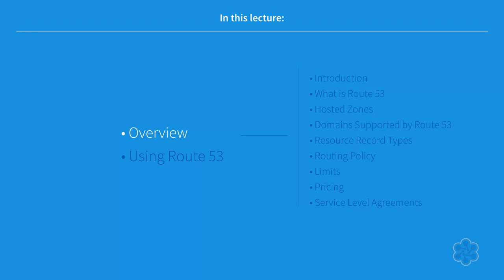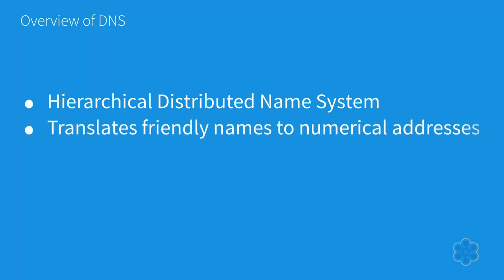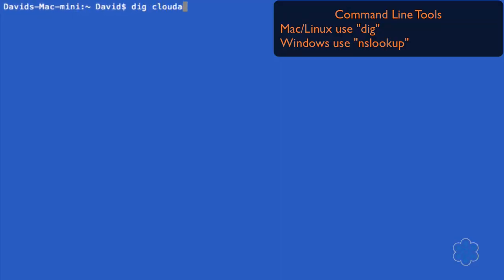The domain name system, DNS, is a hierarchical, distributed naming system for computers, services, or any resource connected to the internet or a private network. It associates various information with domain names assigned to each of the participating entities and is responsible for the translation of domain names to numerical IP addresses. A common analogy used to explain DNS is that it is the phone book of the internet, as you can look up a human-friendly name — for example, www.cloudacademy.com — and it will provide the respective IP address.